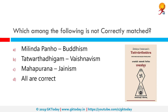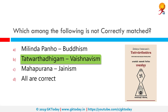Which among the following is not correctly matched? Among the given options, option B, which matches Tattvarthsutra Digambara to Vaishnavism, is incorrect. Tattvarthsutra Digambara actually belongs to Jainism and is composed by Umaswati.